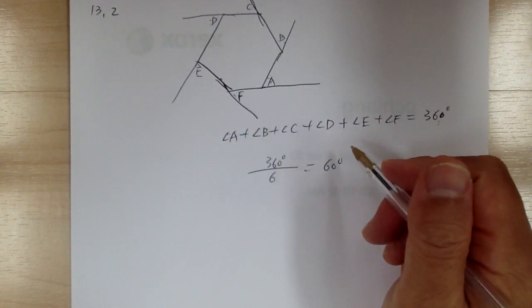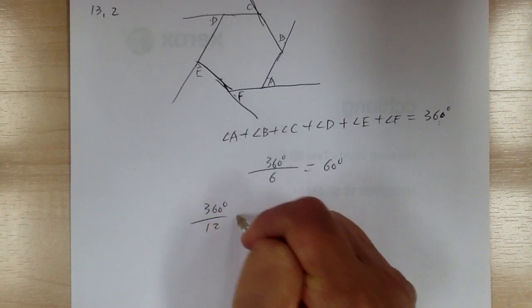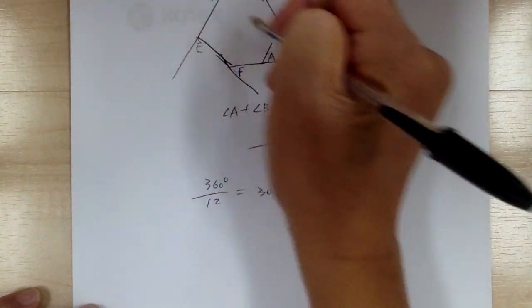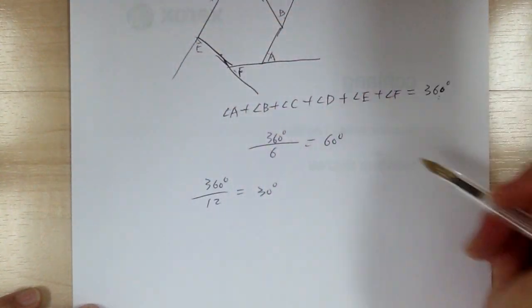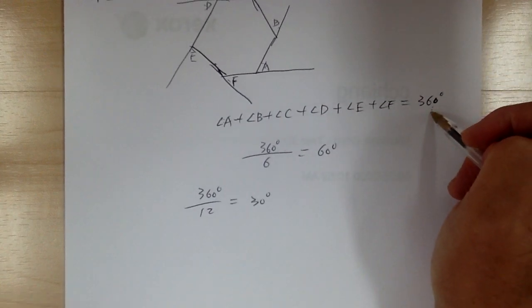Let's say if you have a dodecagon, the 12-sided polygon, then you do 360 divided by 12, which gives you 30 degrees each. So when you have a 12-sided regular polygon, each exterior angle would be 30 degrees. Again, the sum of the exterior angles is always equal to 360 degrees.